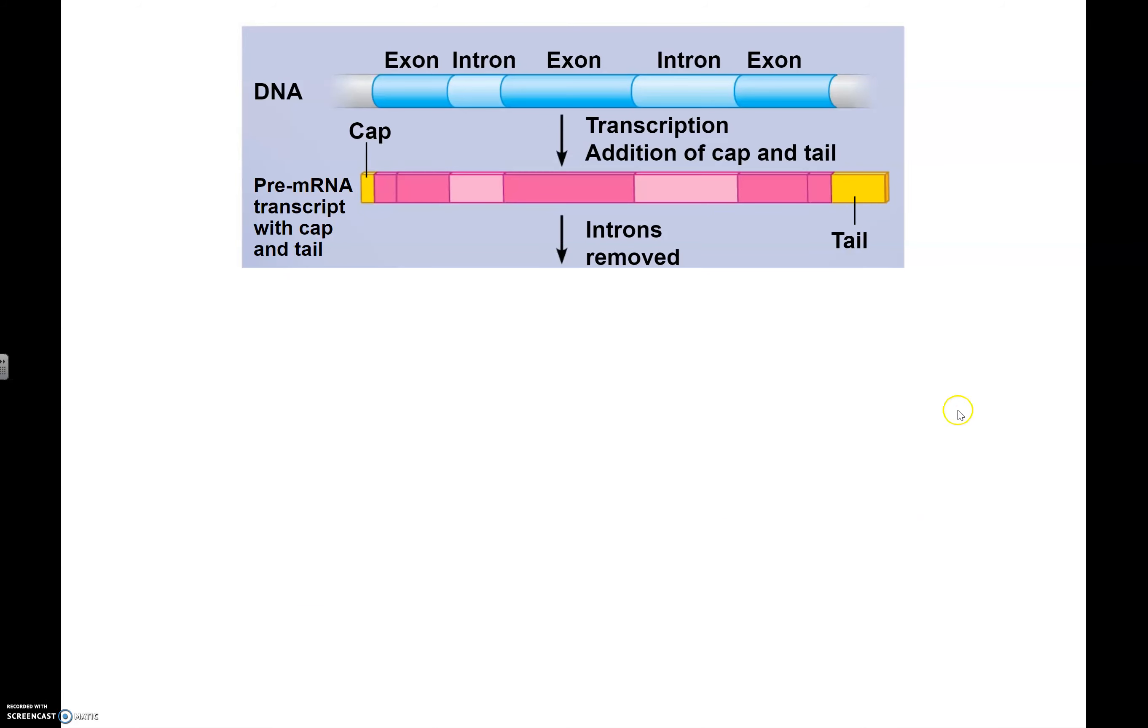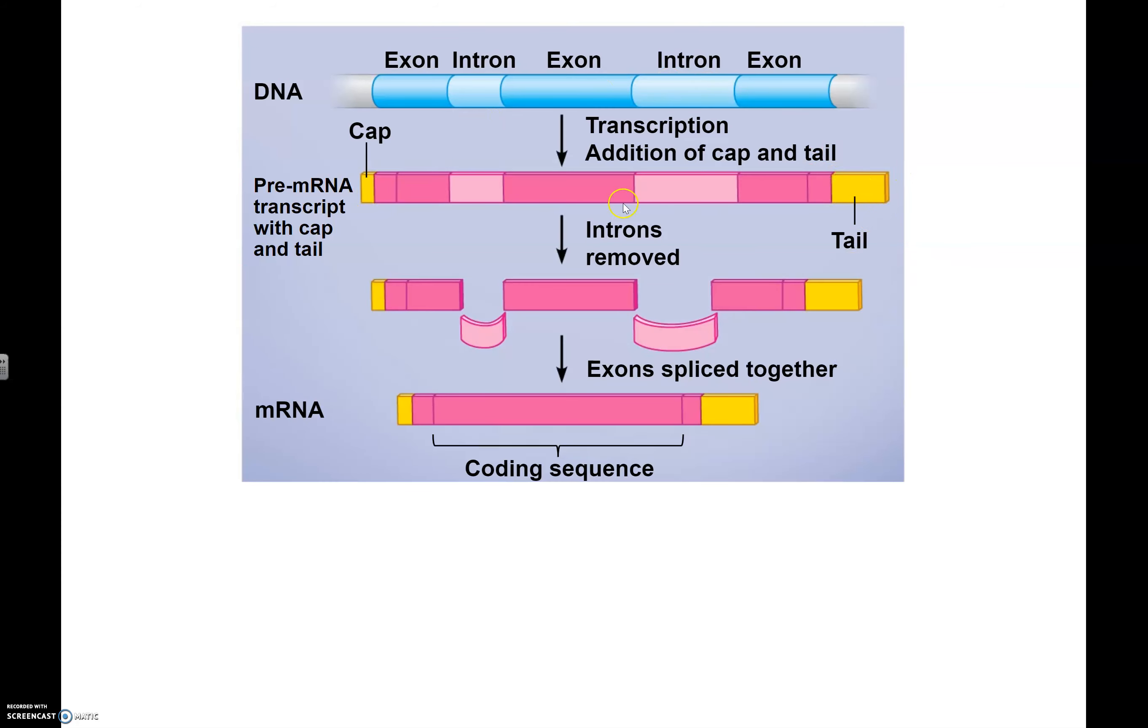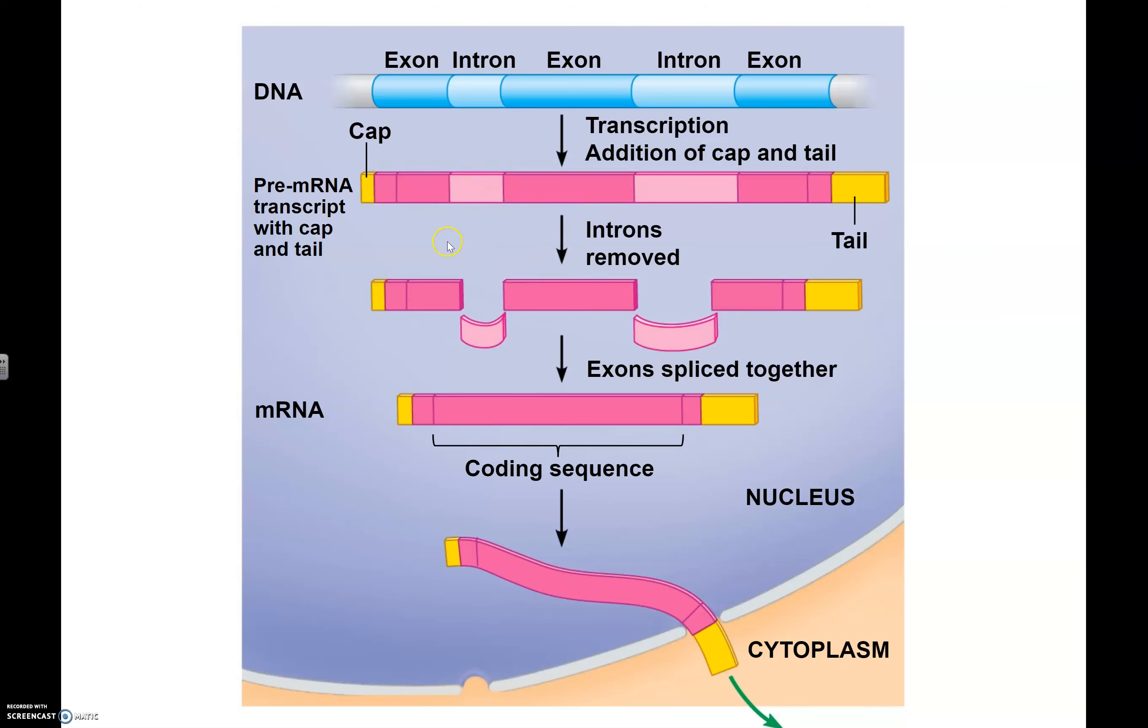To recap with the diagrams on your notes, we start off with DNA, and DNA contains exons and introns as well. The entire thing gets transcribed in the process we talked about in the last video. Then we add on that 5' guanine cap as well as a poly-A tail, which are highlighted in yellow. The next step is to remove the introns, so they get cut out by the spliceosome.